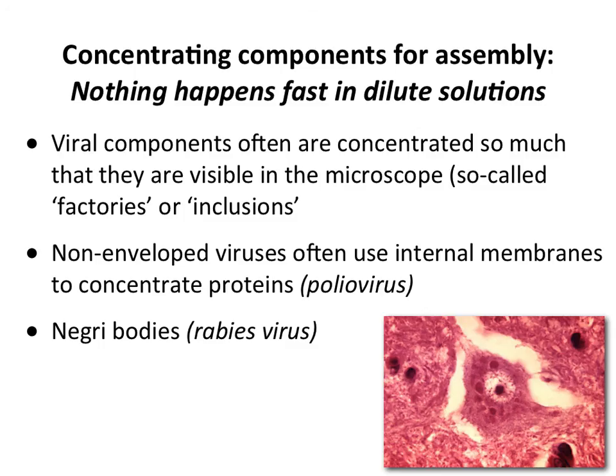Nothing happens fast in dilute solutions — you have to be concentrated to assemble quickly. This is achieved in a variety of ways: concentrating viral components so assembly occurs in a reasonable amount of time. This leads to sometimes visible bodies in the cell, which we often call inclusions or factories. One way of speeding up assembly is to make these inclusions.